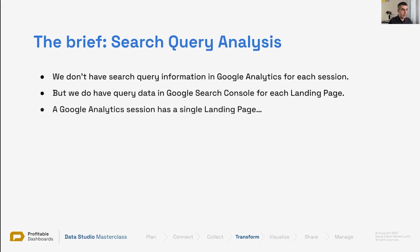We cannot see the number of sessions or conversions in Google Search Console — those data points are stored in Google Analytics and are at the session scope. A Google Analytics session has a single landing page, so landing page is a property of a session and is session-scoped. We do have access to the landing page for each Google Analytics session.